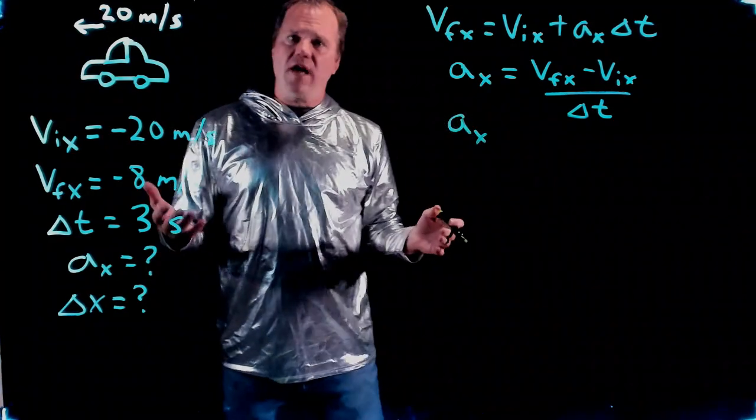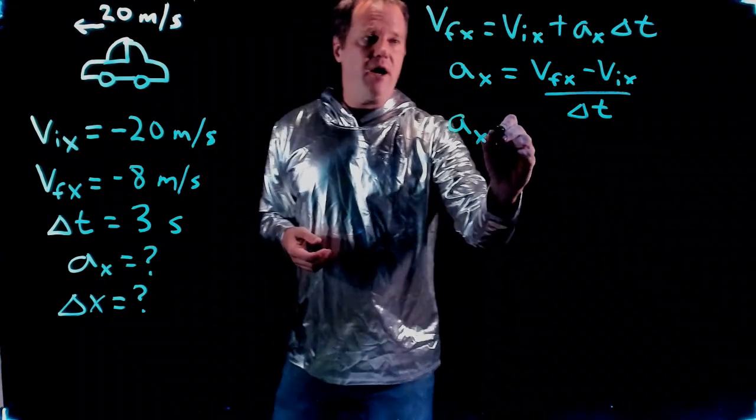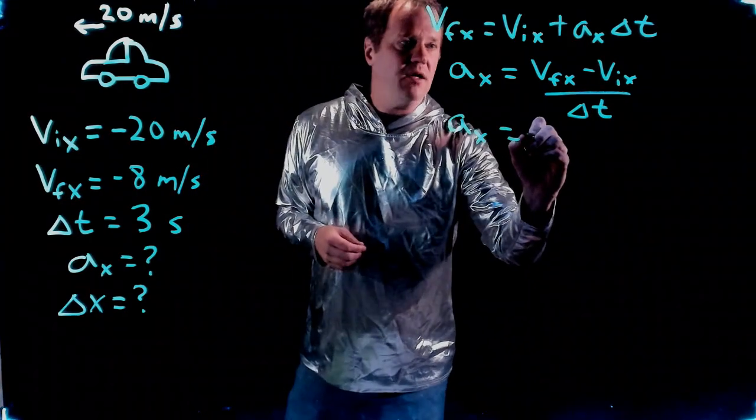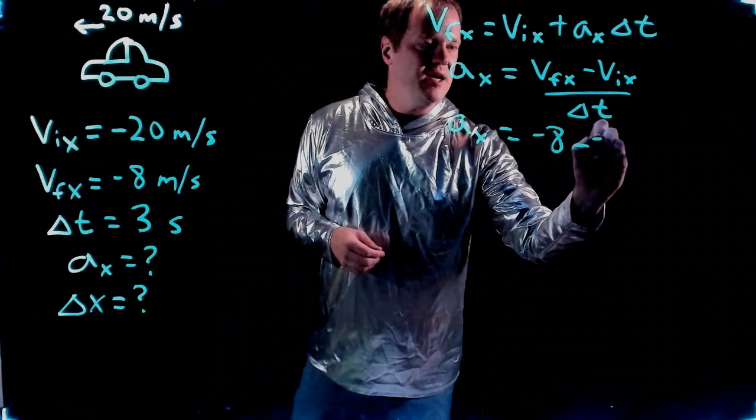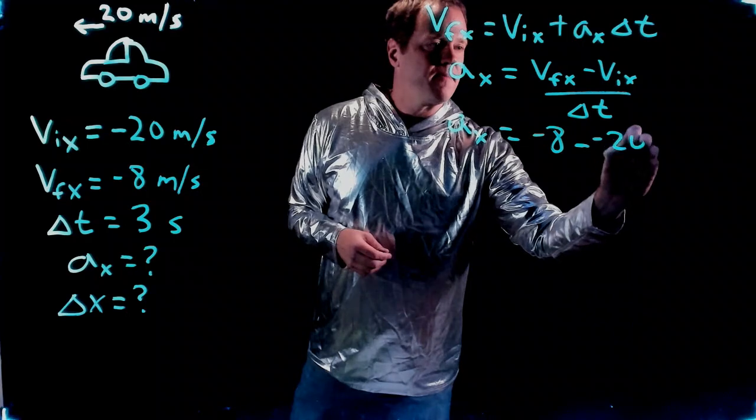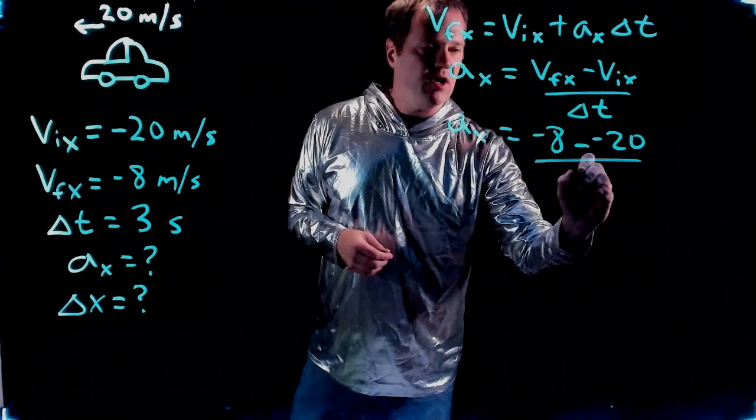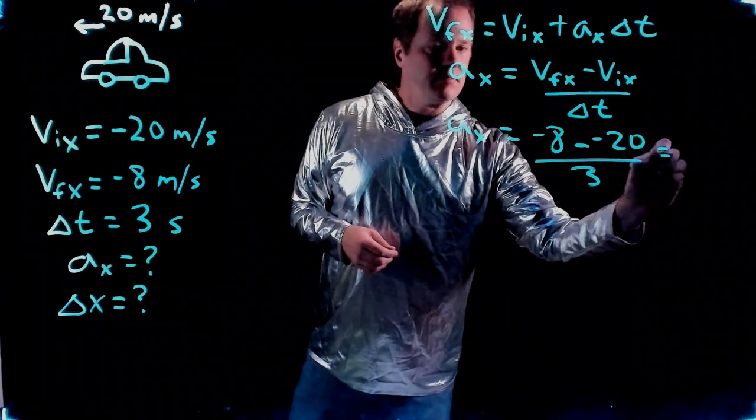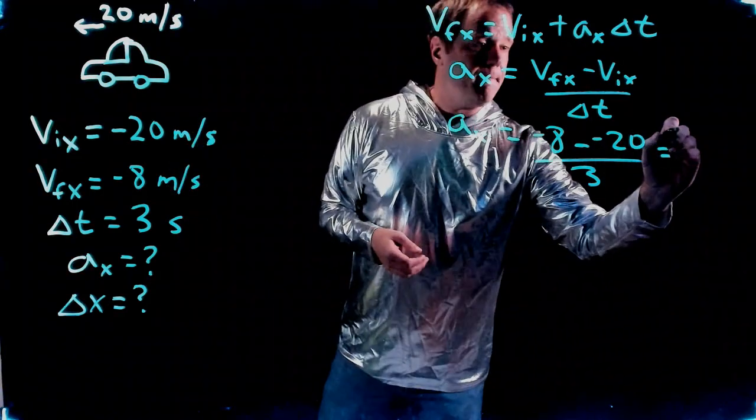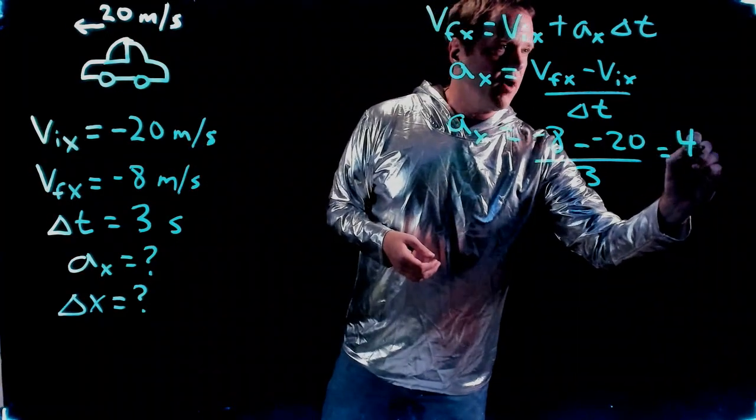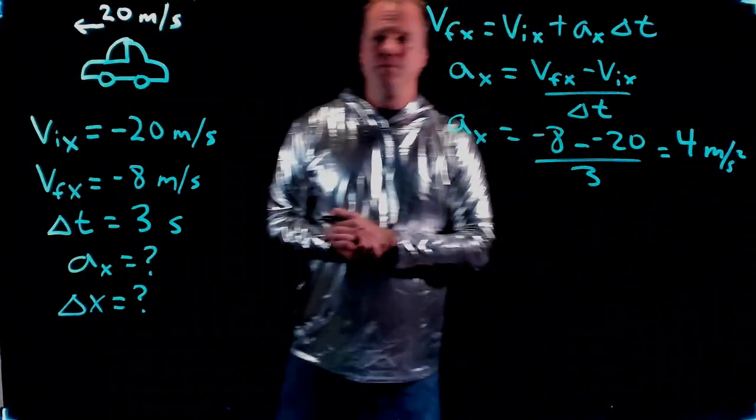I can just plug in the numbers. Got to be careful - there's lots of minus signs flying around. Final velocity of negative 8, initial velocity of negative 20, and a time interval of 3. I throw that into my calculator and it spits out positive 4 meters per second squared.